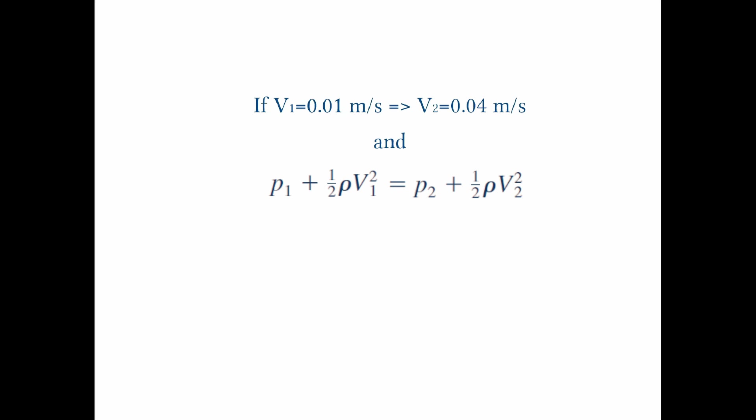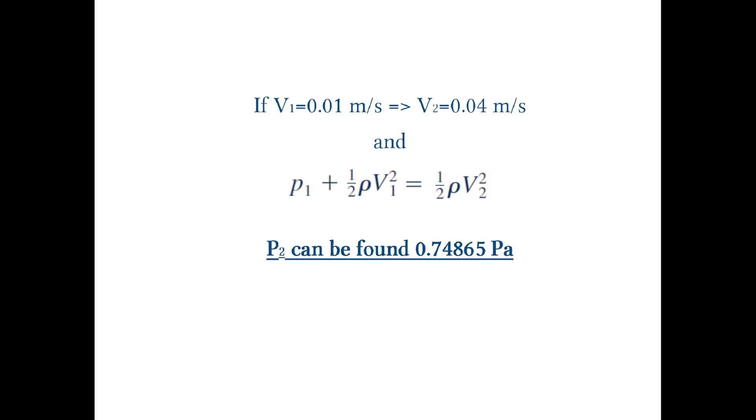The equation becomes P1 plus one-half rho V1 squared equals one-half rho V2 squared. Since we've calculated V2 using the continuity equation, the only unknown is P1. We calculate P1 as 0.74 Pa. We have solved the problem using analytical solutions and now we want to solve it using a computer program.